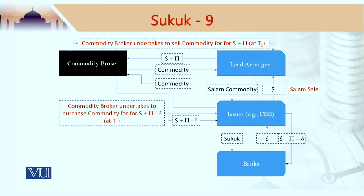This structure I would explain slowly because it does not have simple steps, so I want to make sure that you understand it properly. Step number 1 is the issuer, which in this case is the Central Bank of Bahrain. In this structure we have not given a reference to an SPV. In all other structures we would give a reference to a special purpose vehicle, but in this case the Central Bank of Bahrain may find it useful not to set up an SPV to issue Sukuk Salam.